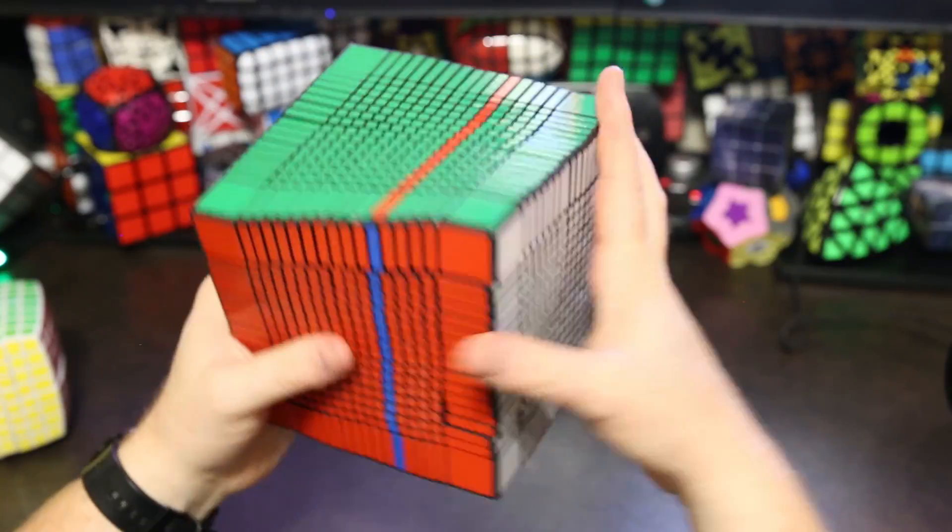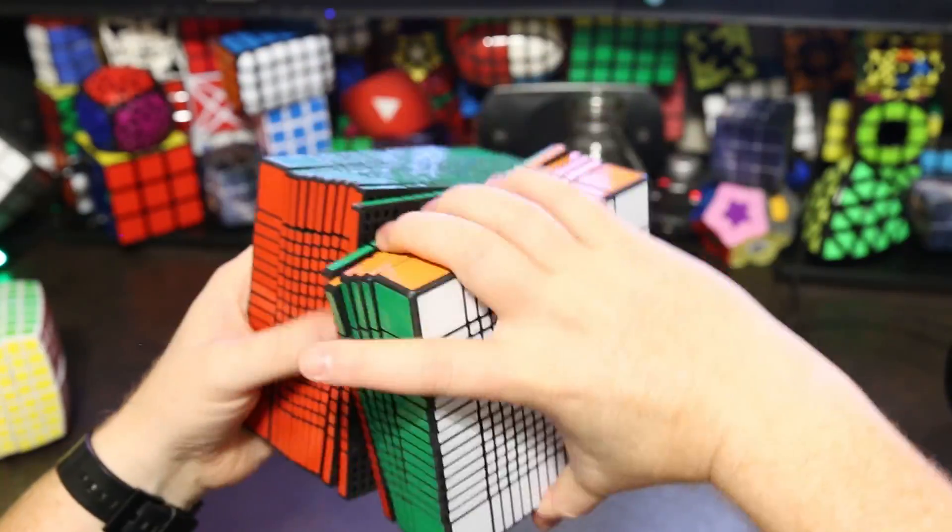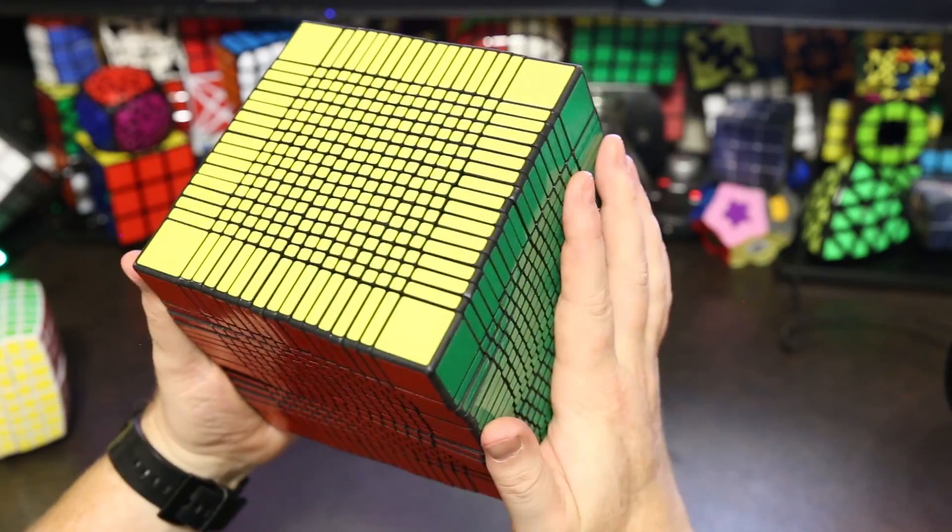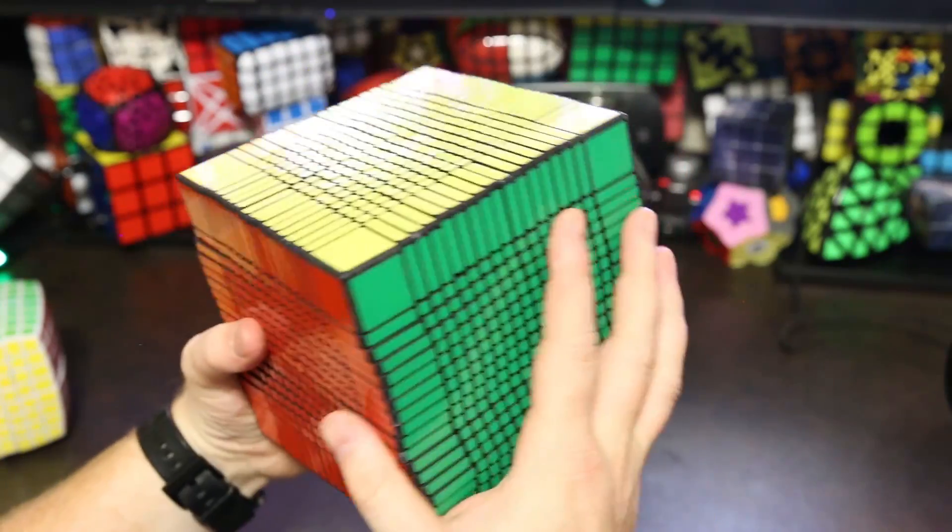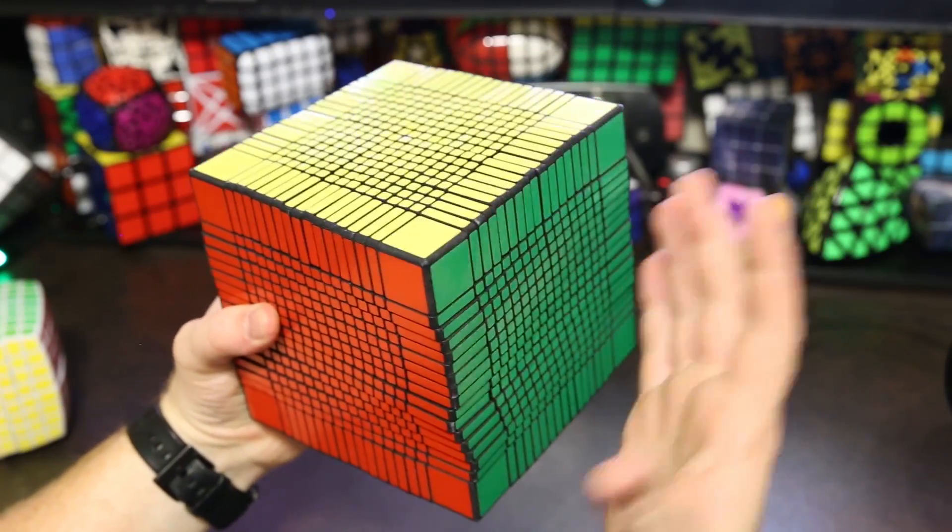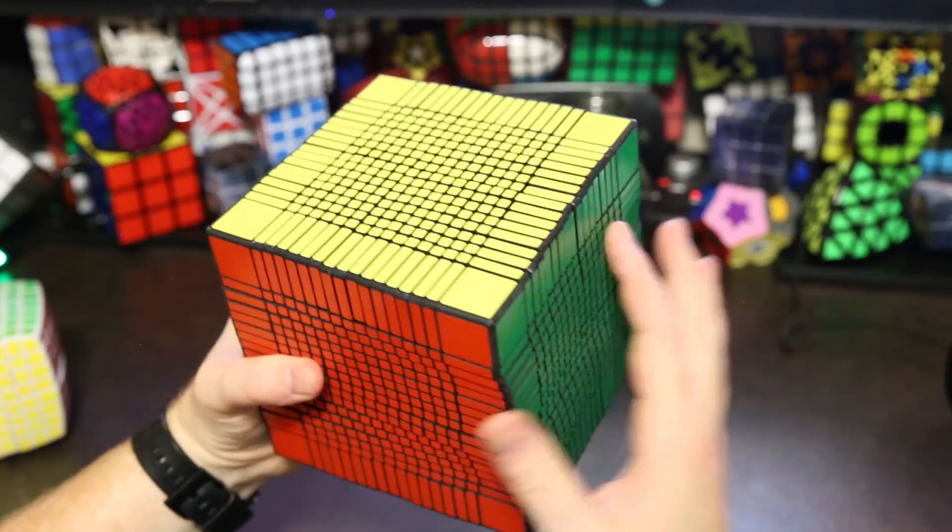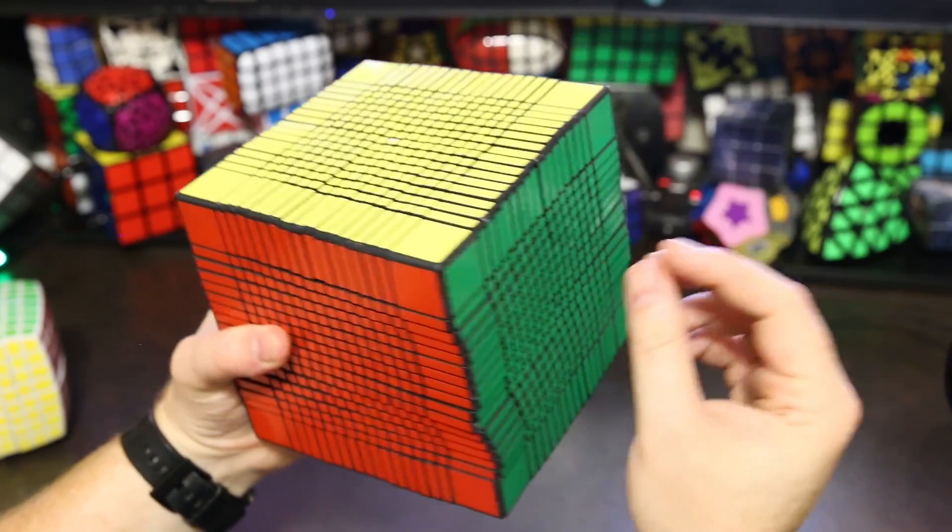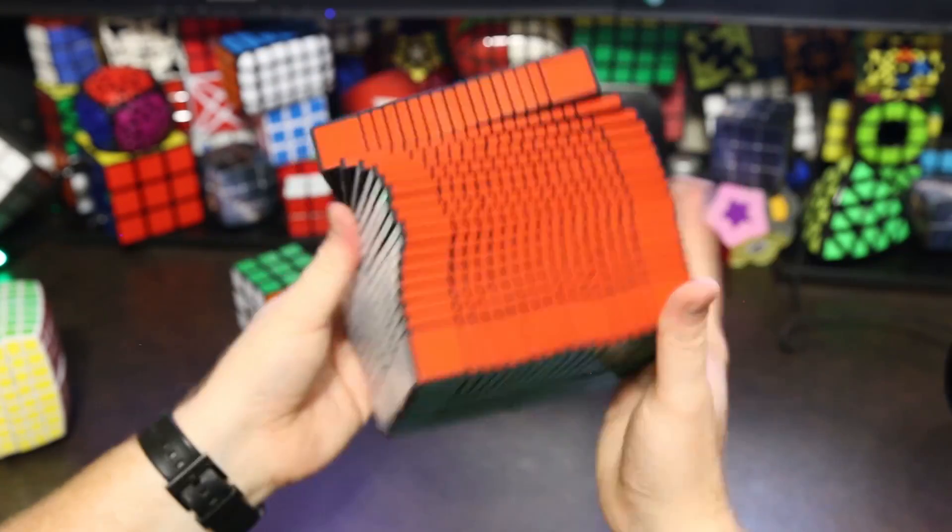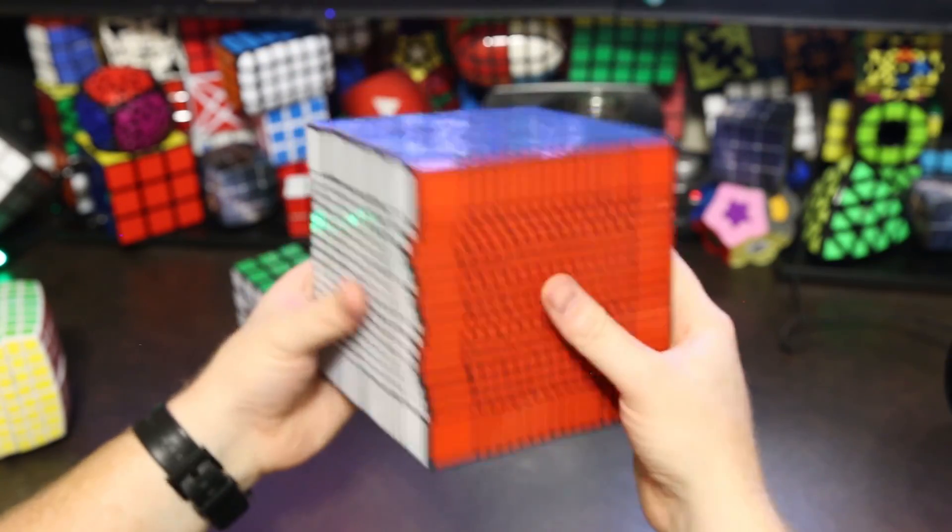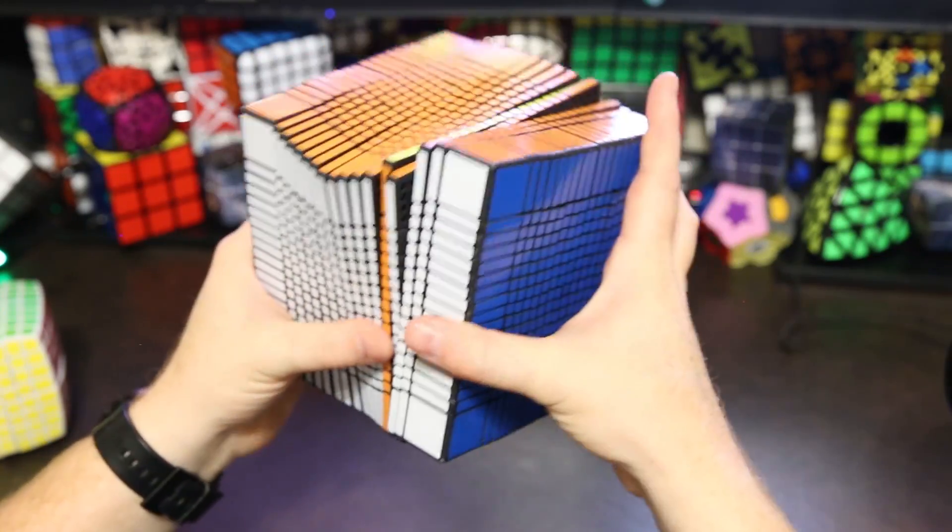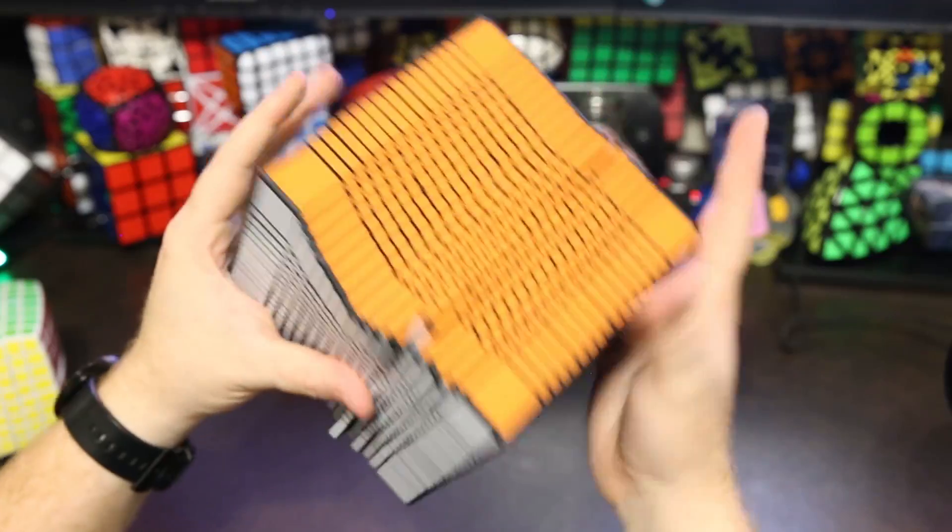The reason it turned so well is this one was actually broken in by Aaron. Aaron, he actually solved this thing. And so as he was solving it, he was breaking it in. And so what would happen for him as he solved it, it would get looser and looser and looser until it was so loose, getting close to fall apart. He would then have to tighten the puzzle, tension it. And that would happen multiple times as he played with it. And so that's how he was able to make this puzzle turn so well. He's actually just solved the puzzle. And that's all it took to make it turn this well.